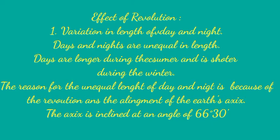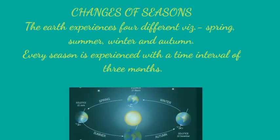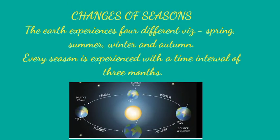One of the effects of the revolution of the Earth is that we experience four different seasons: winter, summer, spring, and autumn. The time interval between each season is roughly three months. Summer comes after spring, then autumn after summer, then winter after autumn, and then back to spring. Each of these seasons has its own characteristics.